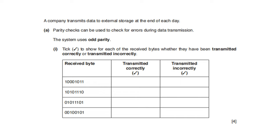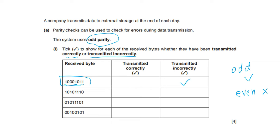A company transmits data to external storage at the end of each day. A parity check is used to check for errors, and the system uses odd parity check. Tick whether each received byte was transmitted correctly or incorrectly. Count the ones: if the count is odd the data transmitted correctly; if even, incorrectly. First byte has 4 ones — even — transmitted incorrectly. Second byte has 5 ones — odd — transmitted correctly. Third byte has 5 ones — transmitted correctly. Fourth byte has 3 ones — transmitted correctly.